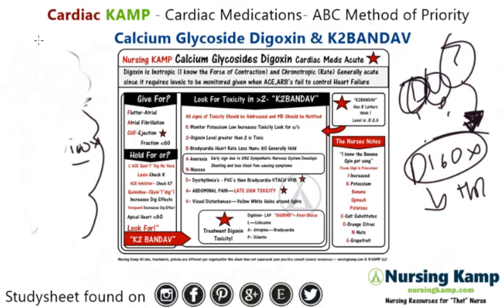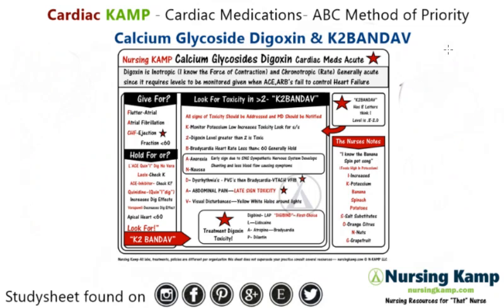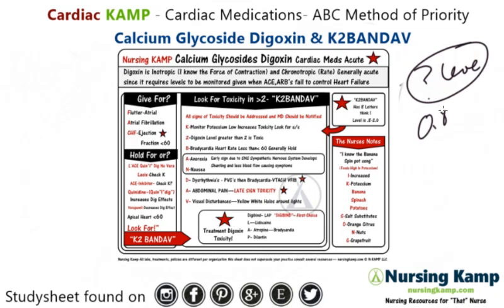The mnemonic for this is K2BandieAV. Now, calcium glycosides — generally if you see calcium glycosides, the first thing you question is what's the level? And the level is generally 0.8 to 2.0.